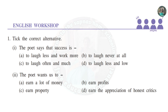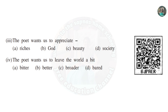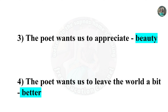In the English workshop, the first question is: take the correct alternative. The poet says that success is to laugh often and much. Second, the poet wants us to earn the appreciation of honest critics. Third, the poet wants us to appreciate beauty. And the poet wants us to leave the world a bit better.